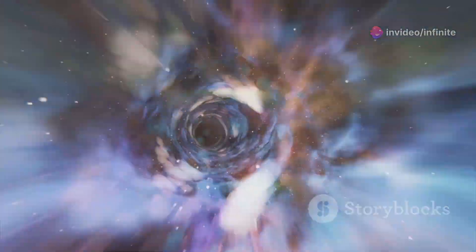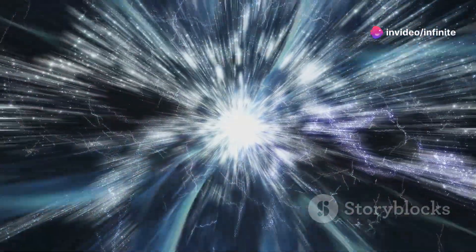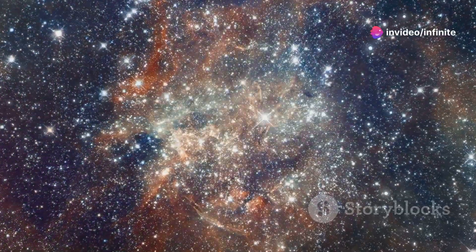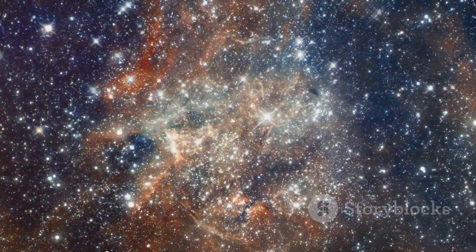That's essentially what cosmic inflation proposes happened to the universe in the first fraction of a second after the Big Bang. This rapid expansion was incredibly swift. This rapid expansion would have smoothed out any initial irregularities, explaining the universe's uniformity.